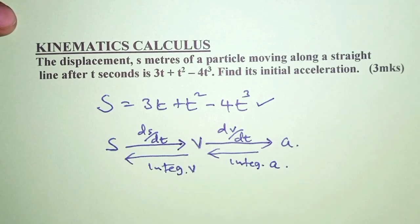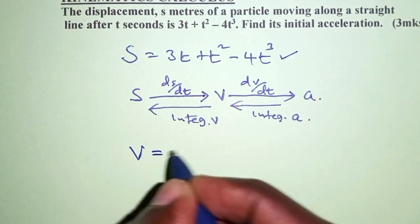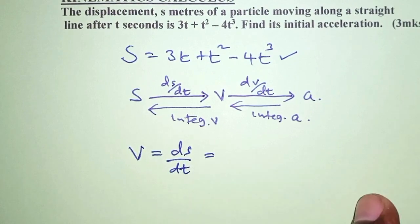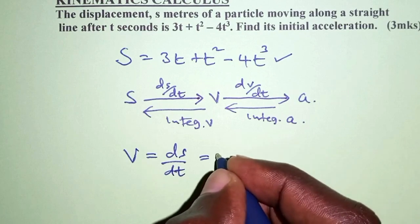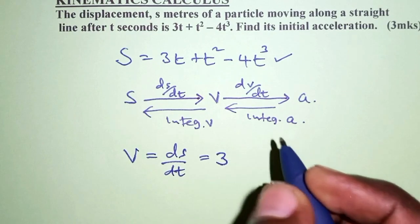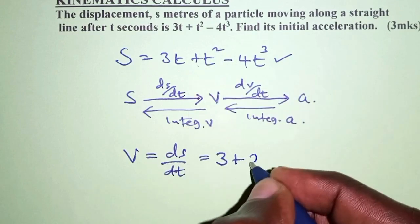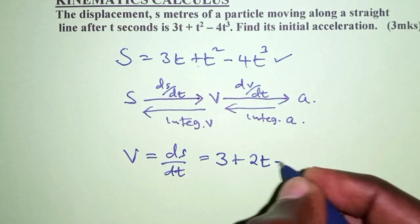So we're going to say v = ds/dt, which is, so let's differentiate this. 3t becomes 3, plus this is 2t, and then this is 3 times 4, so we have minus 12t².